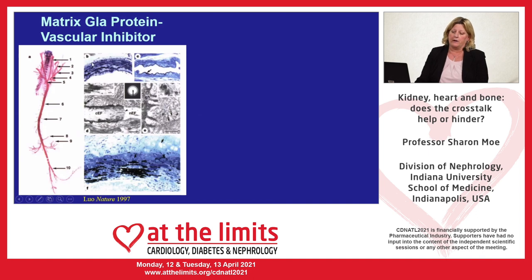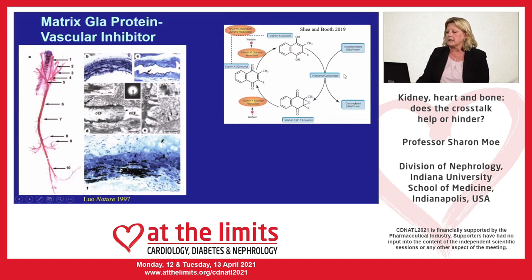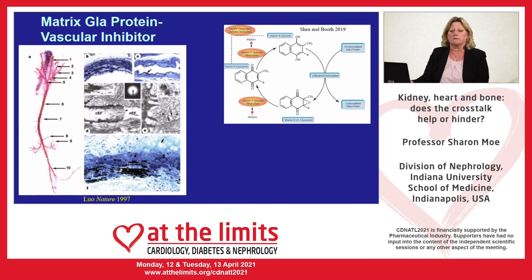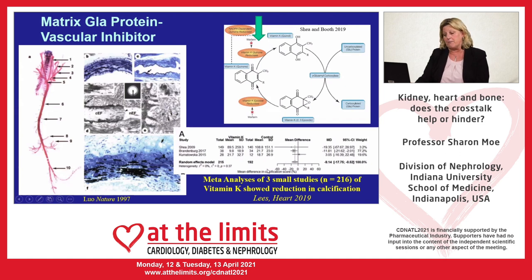Another inhibitor is matrix Gla protein. Knockout mice for this gene develop diffuse arterial calcification, shown in red with alizarin staining, and black along the elastin fibers on higher magnification. Matrix Gla protein requires gamma-carboxylation to become an active inhibitor, and this step is mediated by vitamin K. One of these enzymes is inhibited by warfarin or coumadin. In dialysis patients who develop calciphylaxis — arterial calcification in the skin leading to skin breakdown — about 50% have been reported to be on coumadin. There are three randomized trials showing reduced vascular calcification by meta-analysis with vitamin K administration.